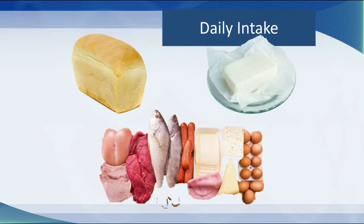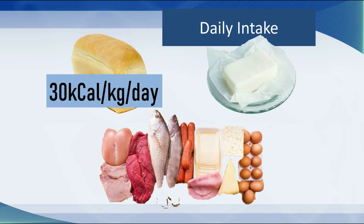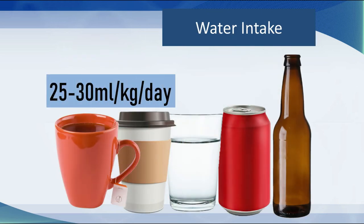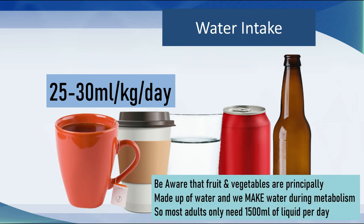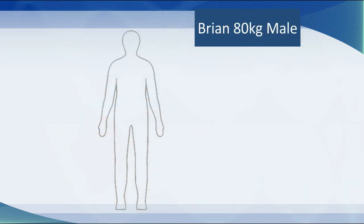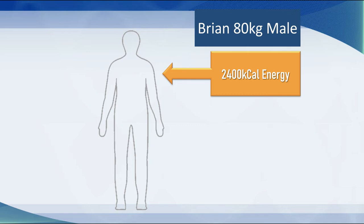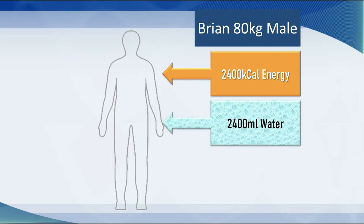In terms of daily intake, on average a human being needs about 30 kilocalories per kilogram per day, and also about 25 to 30 mils per kilogram per day of liquid water. Be aware that fruit and vegetables are principally made up of water and we actually make water during metabolism, so most adults only need about 1,500 mils of pure liquid per day. For Vincent, an 80 kilogram male, that means 2,400 kilocalories of energy and approximately 2,400 mils of water.